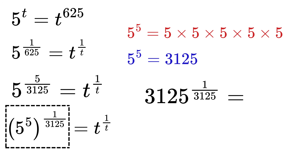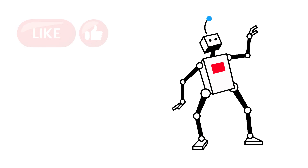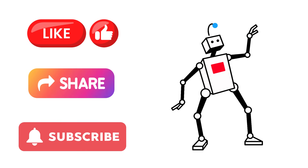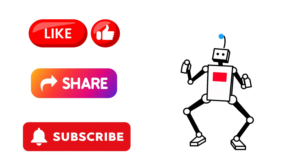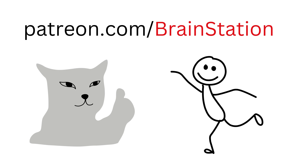And this is equal to t raised to the power 1 over t. Since the bases match the exponents in this special form, we can simply conclude that t must be equal to 3125. And that's it!